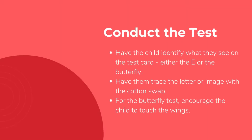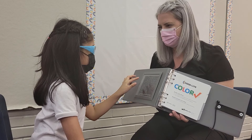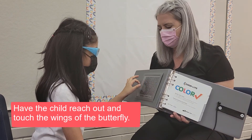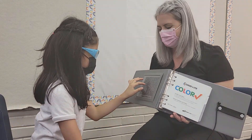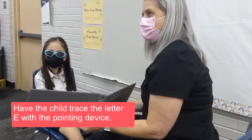Ask the child to identify what they see while wearing the glasses. If using the butterfly test, encourage the child to reach out and touch the wings of the butterfly. If using a random dot E test, ask the child to outline the letter on the card.